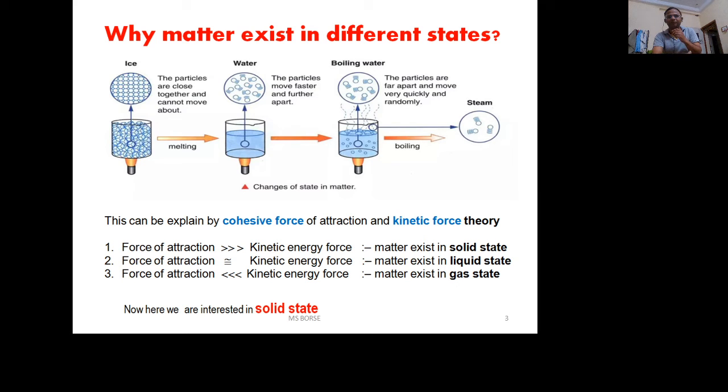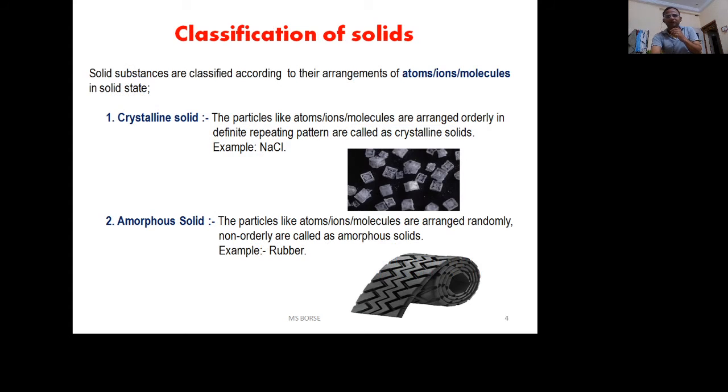Next topic is classification of solids: crystalline solid and amorphous solid. When particular atoms are arranged in orderly, definite arrangement, it's called crystalline solid, for example NaCl. When particles or atoms are arranged randomly or non-orderly, they're called amorphous solids.